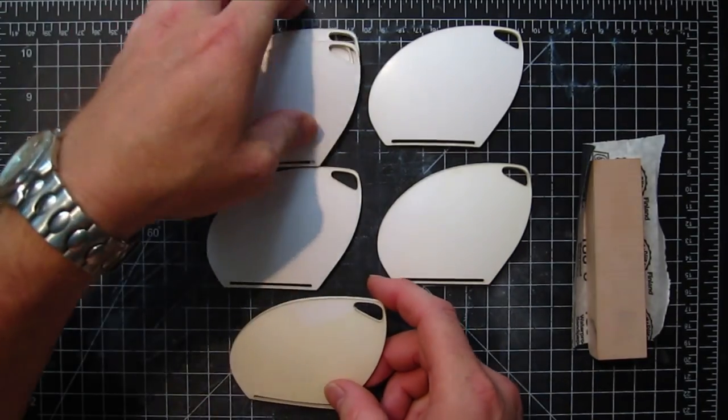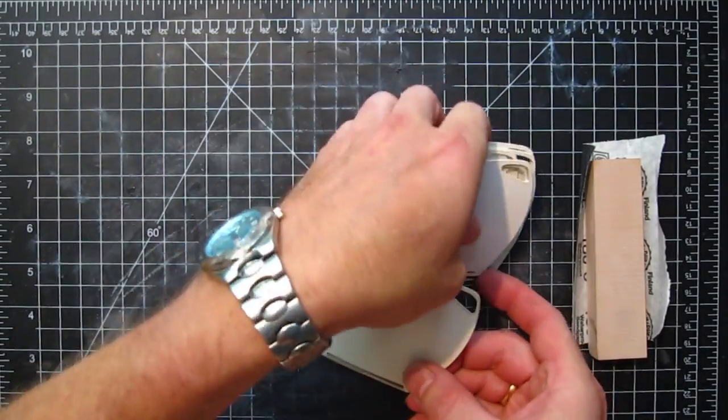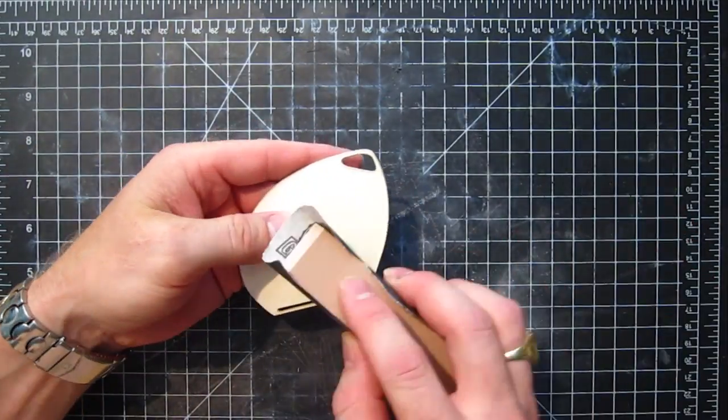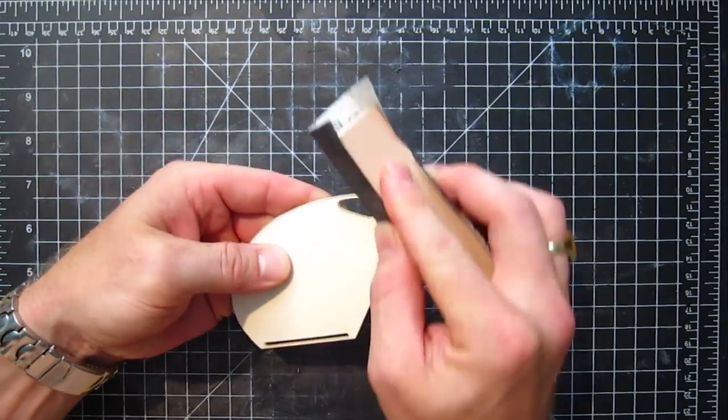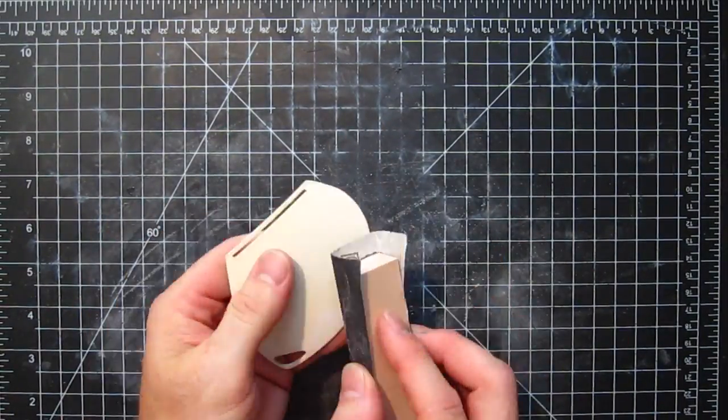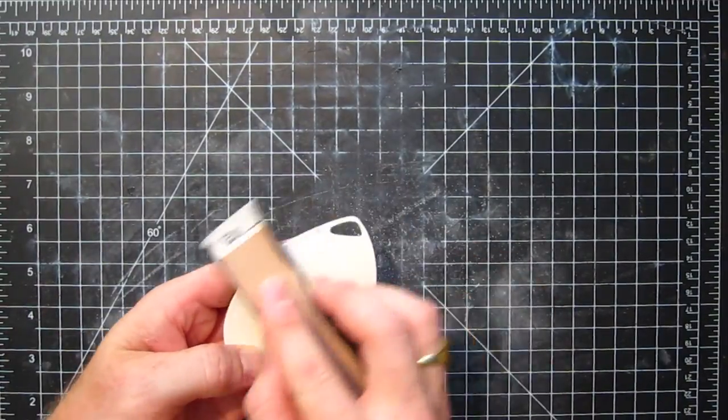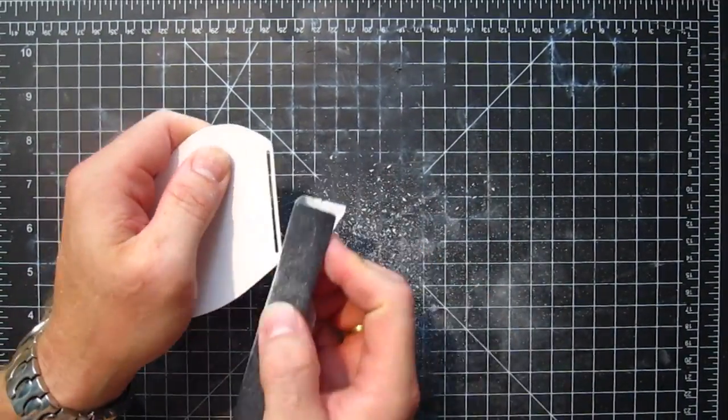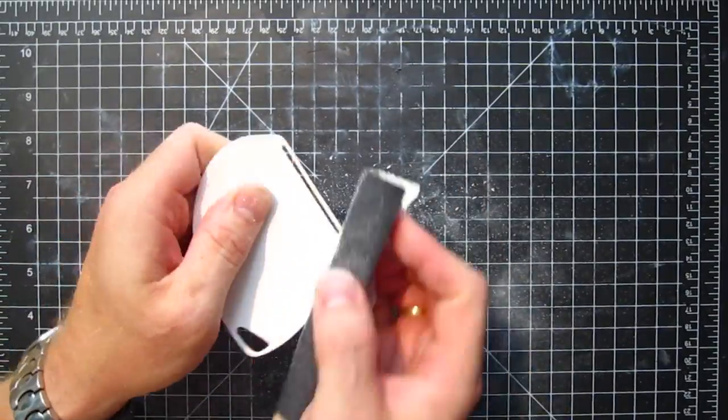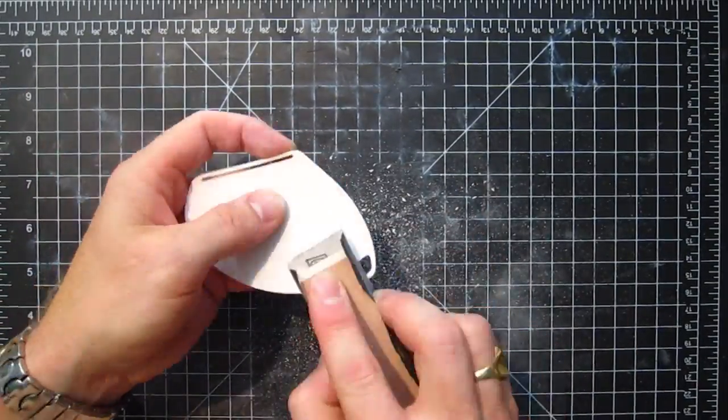So here's all my petals. They need to be sanded. I'm going to start with the 180. First I'm going to do the edges, then I'm going to do the surface. Get it all really nice and smooth. Whatever imperfections are in the plastic, I'm sanding it out. Then I'm moving on to a 220 and then I'm going to go to a 320 and I'm going to wet sand.